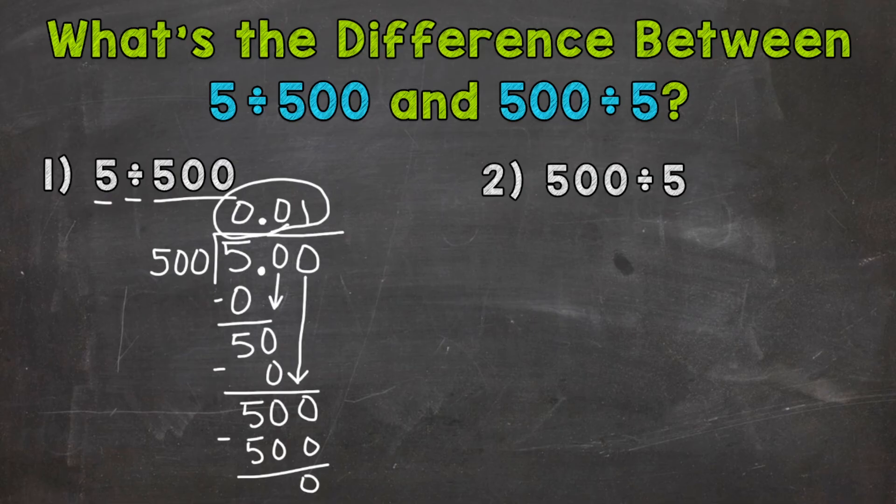So let's compare that to number 2, where we have 500 divided by 5. So 500 is our dividend. 500 divided by 5. Divided by our divisor of 5.